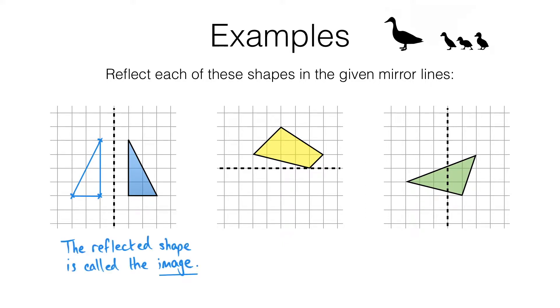Let's take a look at the second example. The first corner is one square above the mirror line, so it's going to be reflected one square below the mirror line here.